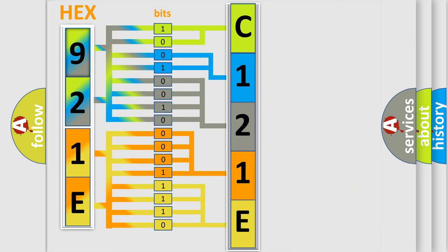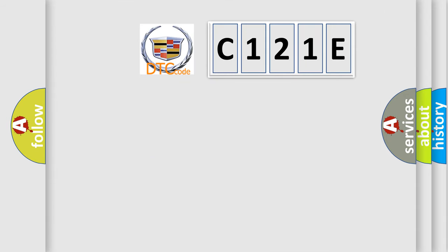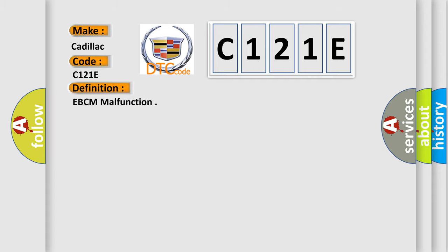We now know in what way the diagnostic tool translates the received information into a more comprehensible format. The number itself does not make sense to us if we cannot assign information about what it actually expresses. So, what does the diagnostic trouble code C121E interpret specifically for Cadillac car manufacturers? The basic definition is EBCM malfunction.